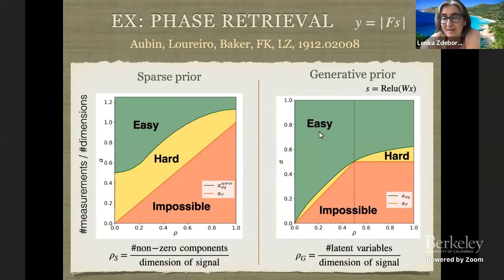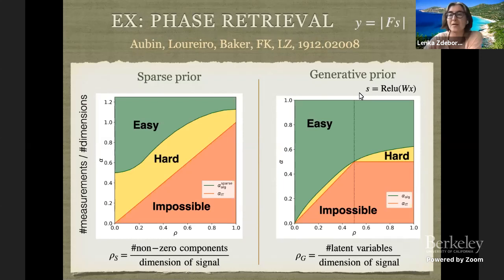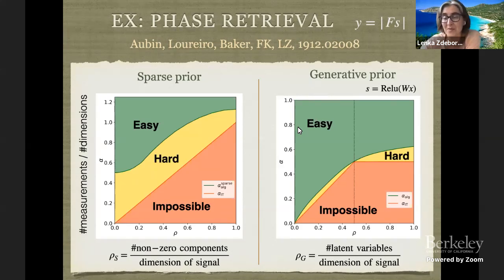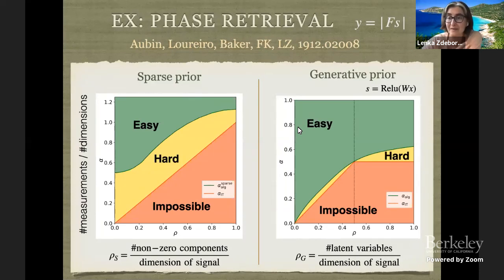This doesn't directly mean that with generative priors things will be easier in practice — we are matching the teacher to the estimation method. But it's definitely intriguing to investigate whether this is true in practice, for example in computed tomography or NMR, whether representing signals via generative models is actually advantageous with respect to compressive sensing compared to sparsity. That's an open question in the field, but this suggests it might be so.